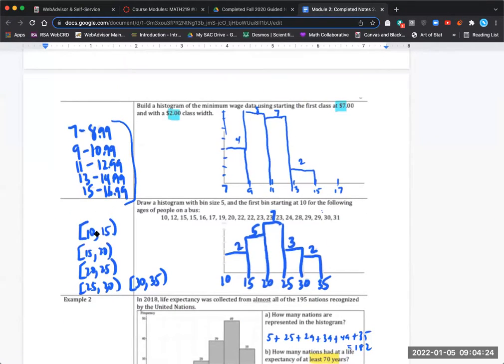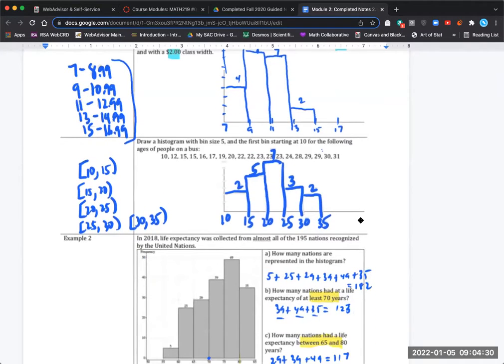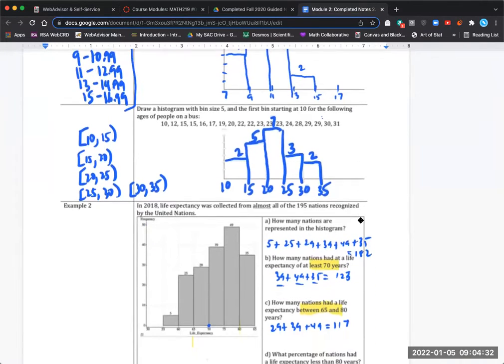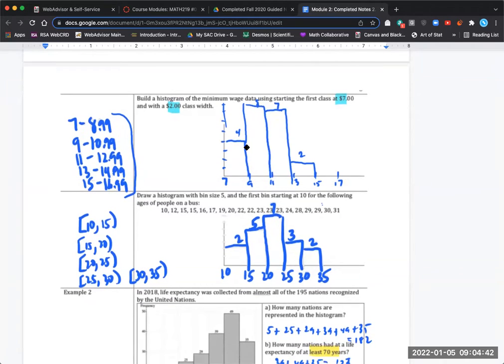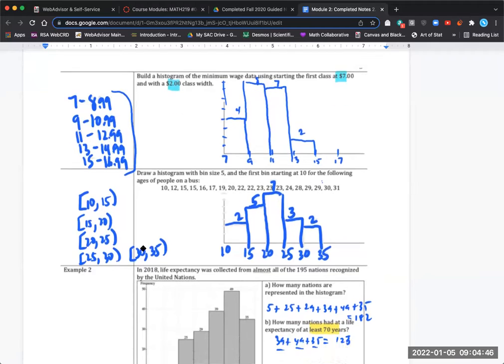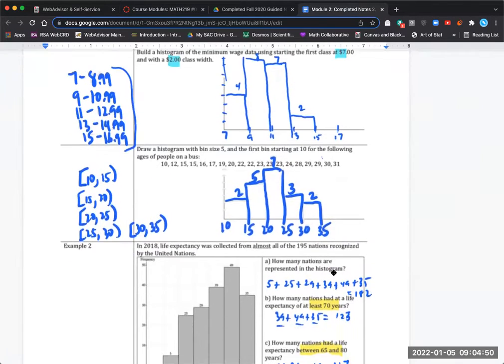There are some technicalities about how we create those, and we'll end up using StatCrunch to do that. In the online homework, there's an example that shows you how to create a histogram. There are technicalities about what values go with each of the bars, the frequencies. There's different ways to write that which are explained, and so you start to see a picture emerging.